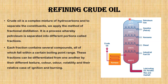This is the fractionating column — where the process of refining crude oil takes place. Just as you have refineries, this diagram of a fractionating column helps to separate the fractions of crude oil, which is a mixture, into the various fractions we use today. These fractions can be differentiated from one another by their different texture, color, odor, volatility, and relative ease of ignition and boiling point.